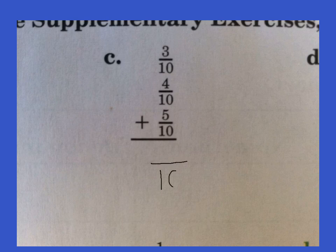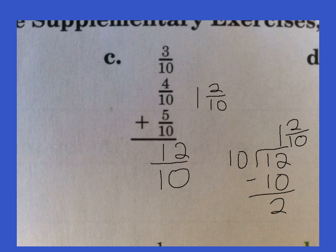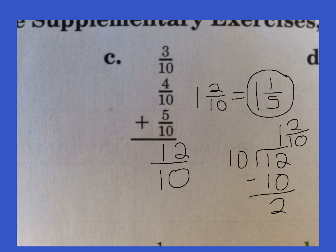Our denominator is 10. Three plus 4 is 7, plus 5 more would give us 12. Ten goes into 12 one time — 10 times 1 is 10. Subtract and we get 2. So it's 1 and 2 tenths. Now this is the first one that we're able to reduce. 1 and 2 tenths — what goes into 2 and 10? Two goes into both. Two goes into 2 one time, and 2 goes into 10 five times. So our reduced answer is 1 and 1 fifth.